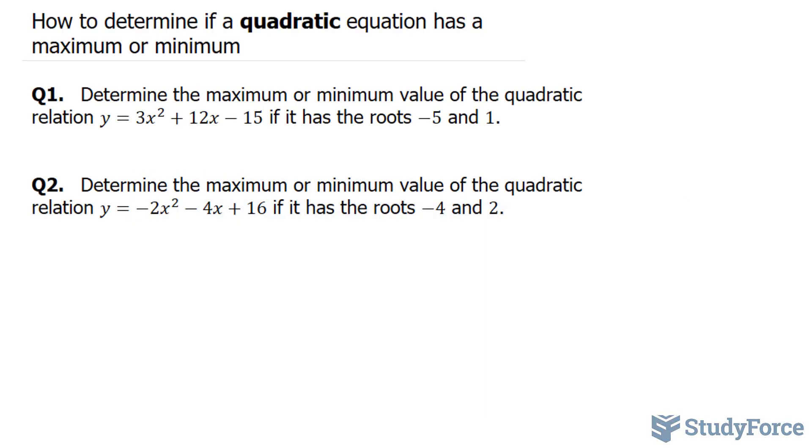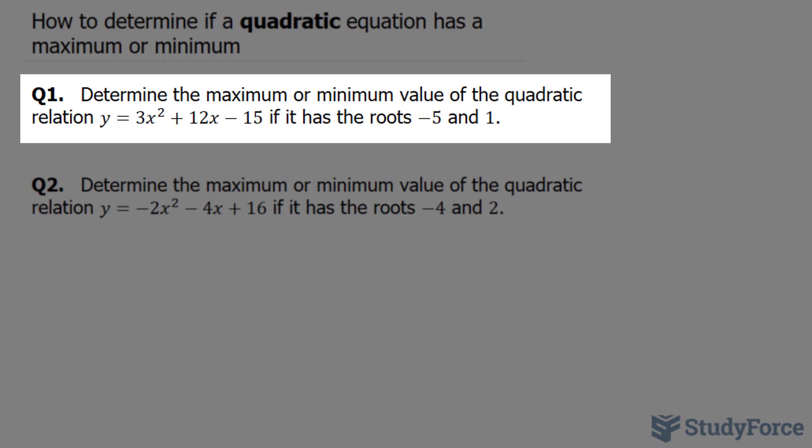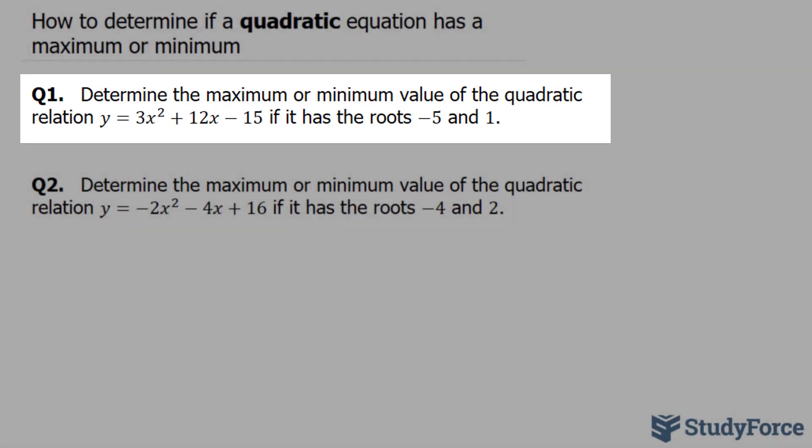In this video, I'll show you how to determine if a quadratic equation has a maximum or minimum. Question 1 asks, determine the maximum or minimum value of the quadratic relation y is equal to 3x squared plus 12x minus 15 if it has the roots negative 5 and 1.